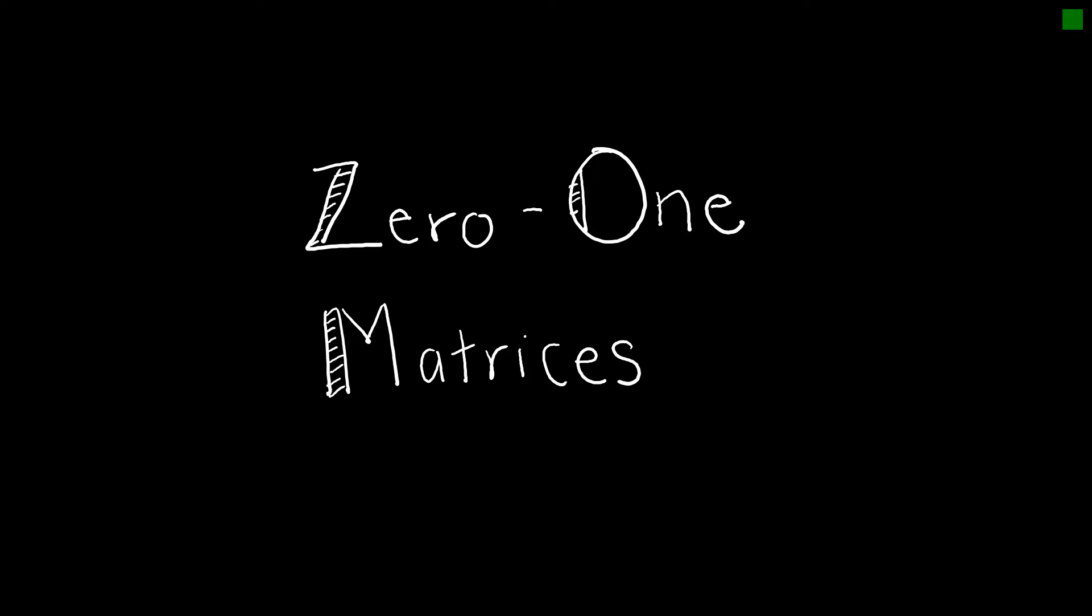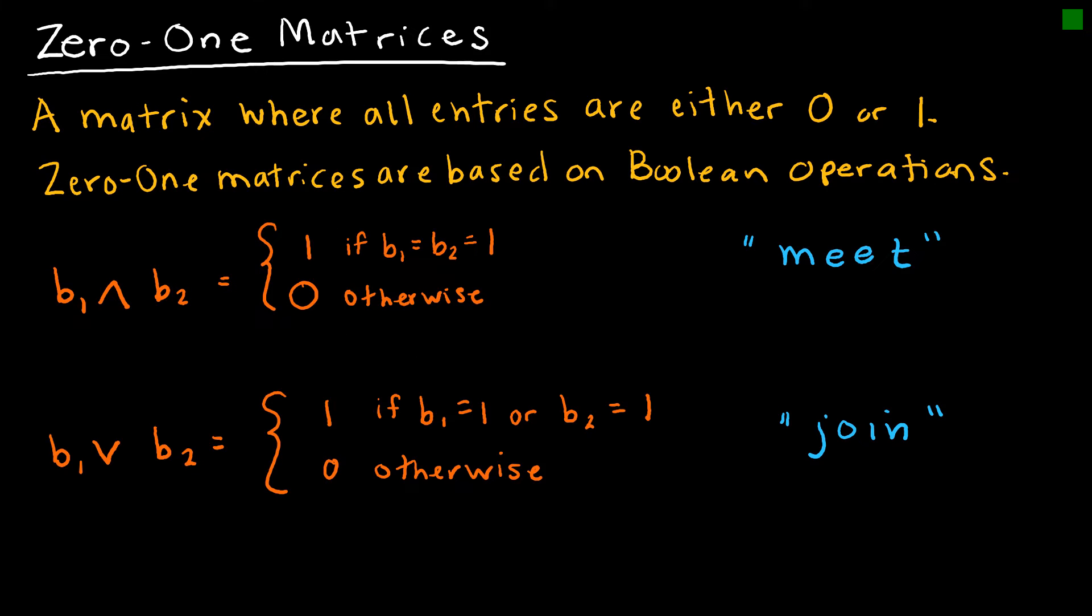In this lesson, we're going to talk about zero-one matrices. So a zero-one matrix is essentially a matrix where all of the entries or values are either 0 or 1. So the identity matrix that we just talked about would be considered a zero-one matrix.